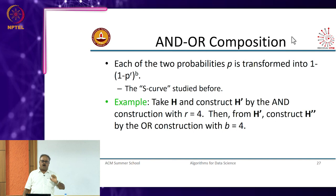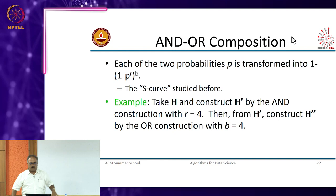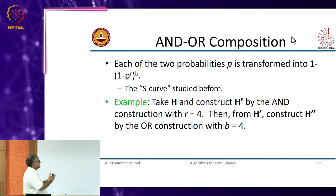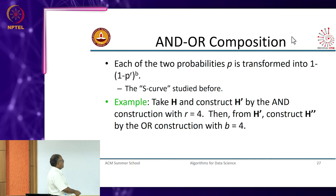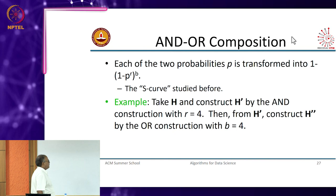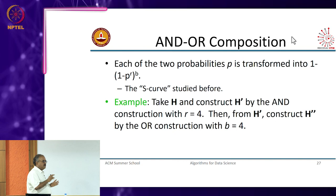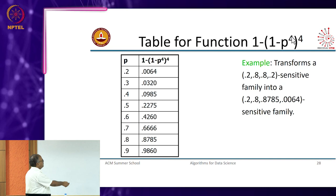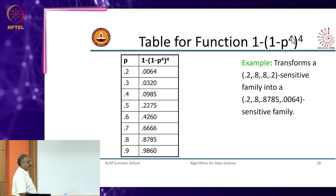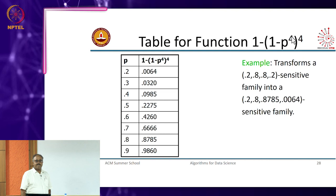You can take any combination — OR then AND then OR then AND — which keeps pushing the upper and lower transitions differently. For example, constructing H-bar by ANDing with R=4, then constructing H-double-prime by OR construction with B=4, you get 1 minus p^4 the whole to the power 4. This transforms a 0.2, 0.8, 0.8, 0.2 sensitive family.